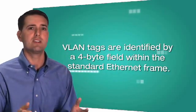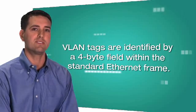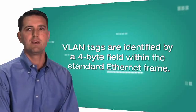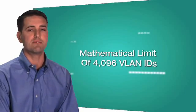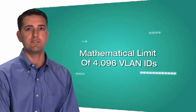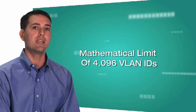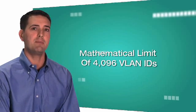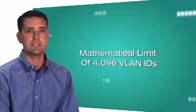VLANs are identified by a 4-byte field within the standard Ethernet frame. This means that there is a mathematical limit of 4,096 VLAN IDs that can be created from the 4-byte field and be used to differentiate communications on any given switch.